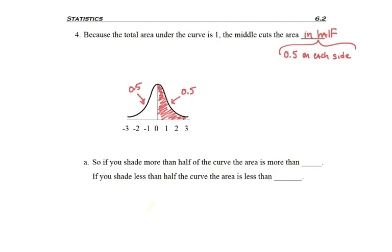The nice thing about this is it helps me when it comes to my answer. I know that if I shade more than half, then the area is going to be more than 0.5. Same thing goes with the information below - if I'm shading less than half of the curve, then the area is going to be less than 0.5, less than half.